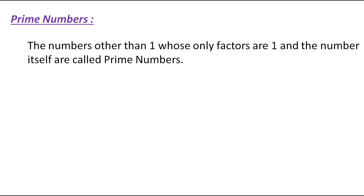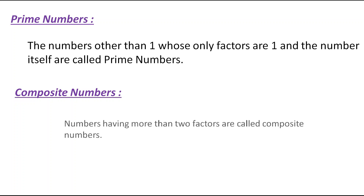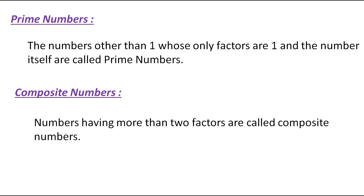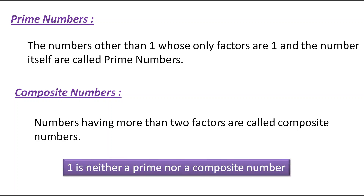Prime numbers are numbers, other than 1, whose only factors are 1 and the number itself. Numbers having more than two factors are called composite numbers. One important thing to remember: 1 is neither a prime nor a composite number. Prime numbers are numbers that will not appear in any other number's multiplication table — they have only two factors: 1 and the number itself.